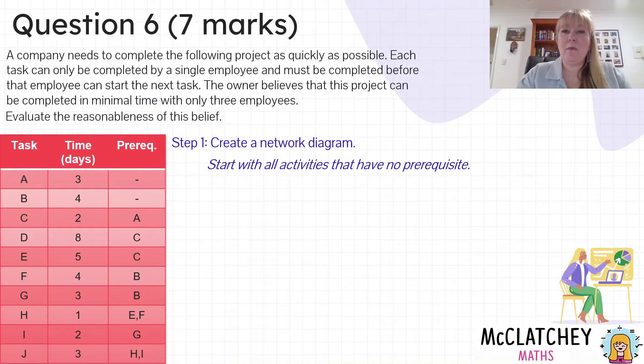A company needs to complete the following project as quickly as possible. Each task can only be completed by a single employee and must be completed before that employee can start the next task. The owner believes that this project can be completed in minimal time with only three employees. Evaluate the reasonableness of this belief.